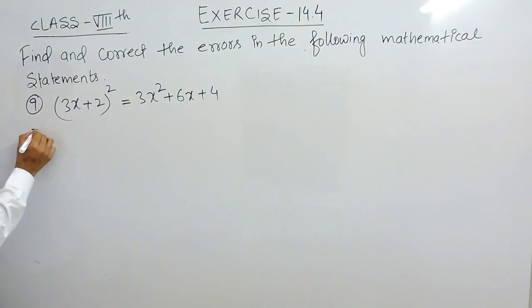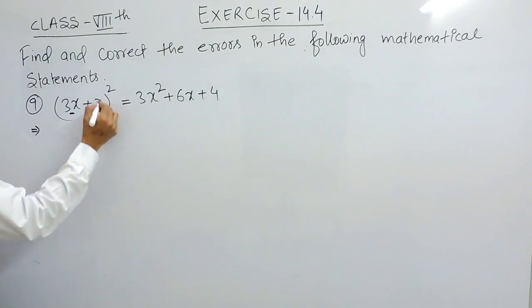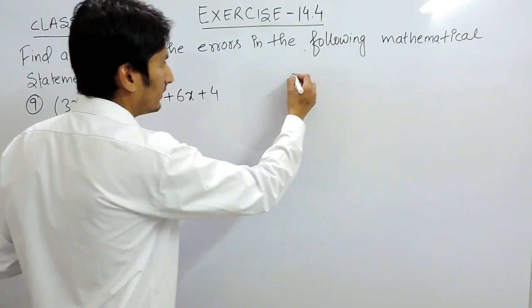First of all, you have to open the bracket. So this is our (a+b), and this is (a+b) whole square. To expand that we have a formula.